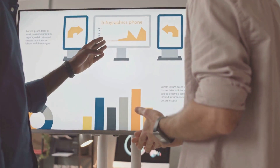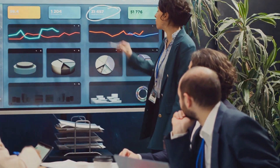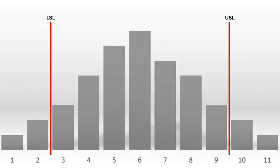Histogram: analyzing variation. To better understand process variation, we turn to the histogram. This bar chart visually represents the frequency distribution of continuous data, helping us identify patterns and spot irregularities. In our toaster production line, we used a histogram to analyze humidity levels over time. By overlaying specification limits, we could determine whether our process was within acceptable bounds or if we needed further adjustments. This insight is crucial for maintaining process capability.